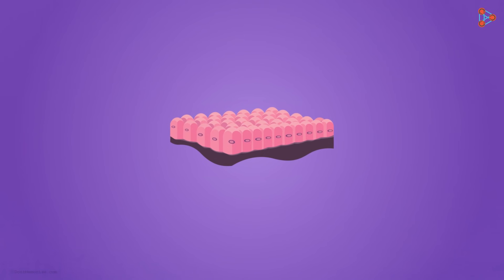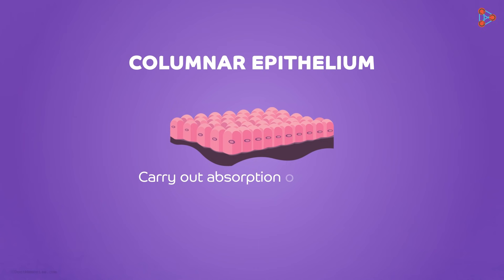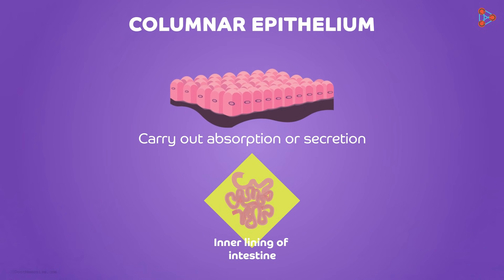The next type is one where we have tall, pillar-like structures, referred to as columnar epithelium due to their column-like appearance. Such tall cells help to carry out absorption or secretion to a good extent. Thus, the best example to locate this type of epithelium is in the inner lining of the intestine.